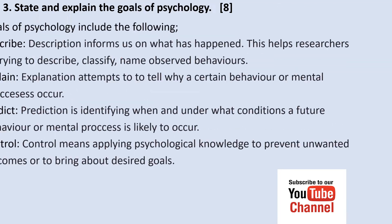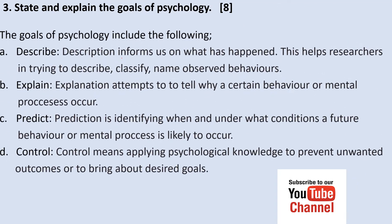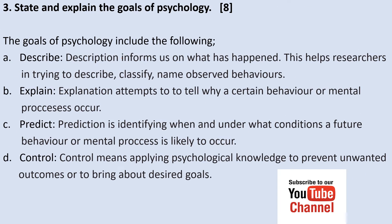Number three: state and explain the goals of psychology. The goals of psychology are about four. The first goal is description — it informs us what has happened and helps researchers to describe, classify, and name observational behaviours.